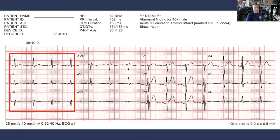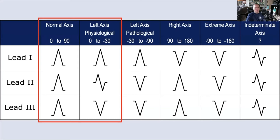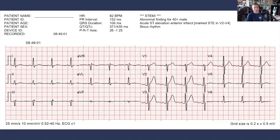Similarly, using the speed method with leads I, II, and III, we have an upright QRS in lead I and a slightly positive QRS in lead II, but then it's negative by lead III — so no single column works. In this particular ECG, doing it the so-called hard way with the hexaxial reference system is actually the easiest way.